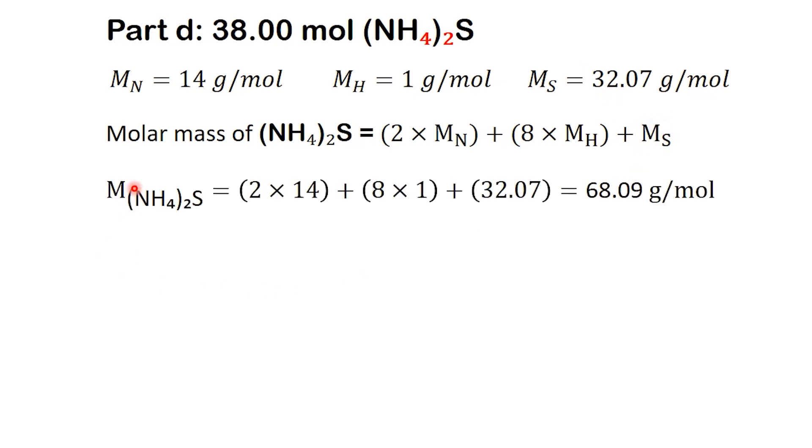Now, let's calculate the total molar mass. After combining the contributions of each atom, we find the molar mass of (NH4)2S is 68.09 grams per mole. Next, we'll use this as our conversion factor.